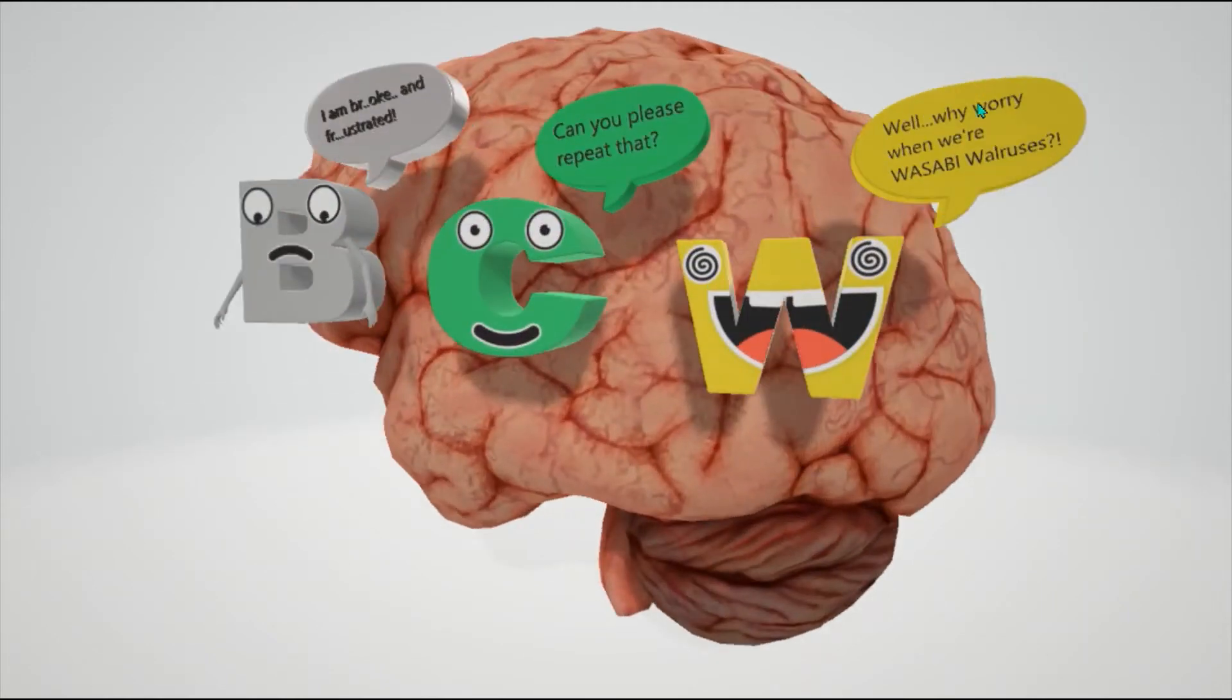As opposed to Wernicke's aphasia, where this guy is saying 'Well, why were you when we're wasabi walruses?' The W alliteration helps us remember Wernicke. He's using language properly and each word is appropriate, but it doesn't make sense what he's saying. Wernicke's is like a word salad.